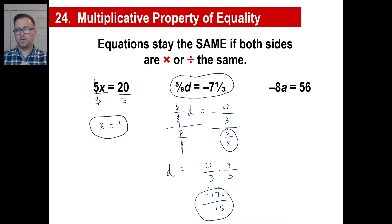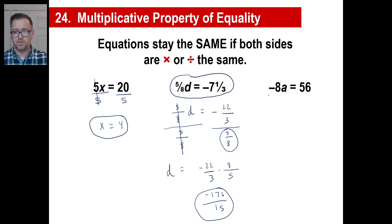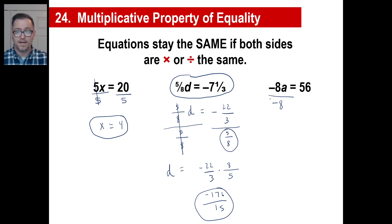Here's a weird one. Negative 8a is equal to 56. I don't care what negative 8a is — I want 1a. In fact, I want positive 1a. So I'm going to have to turn that negative 8 into a positive 1. What am I going to need to divide by to turn negative 8 into a positive 1? The answer is negative 8. Whatever number you see in front of that, you're going to divide by that to get yourself 1, because any number divided by itself gives you 1.